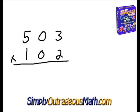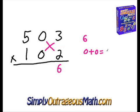We first start off multiplying three times two — that would be six, our first number here. Then we cross multiply: zero times two is zero, and zero times three is zero. So zero plus zero, of course, gives us zero.